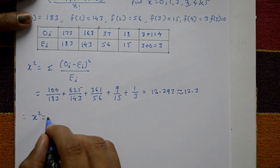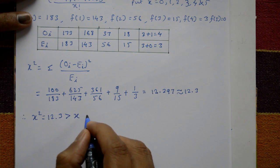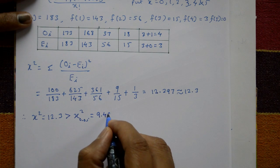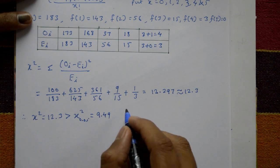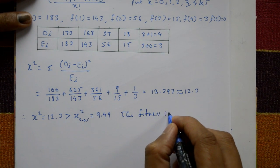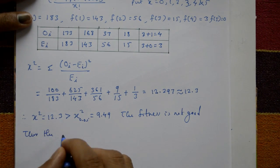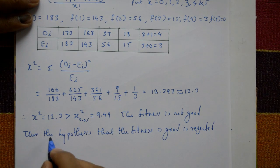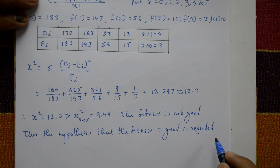Therefore, the calculated chi-square value is 12.3. This value is greater than the given critical chi-square value of 9.49. Since the calculated value is greater than the critical value, the fitness is not good. Thus, the hypothesis that the fit is good is rejected. This is the required solution.